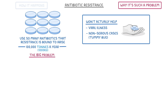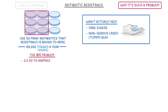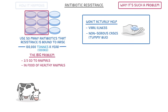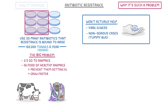The big problem though is farming. Over two-thirds of that 100,000 tons is given to animals. Farmers actually put antibiotics in the food of healthy animals to prevent them from getting ill in the first place and to make them grow faster. Which as you can imagine is basically a breeding ground for antibiotic resistance.